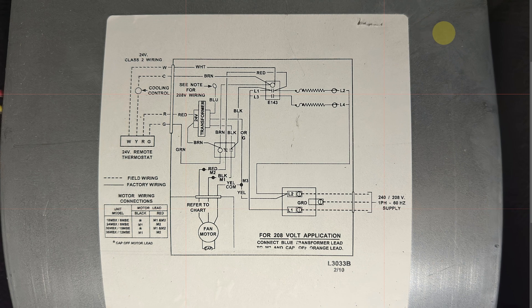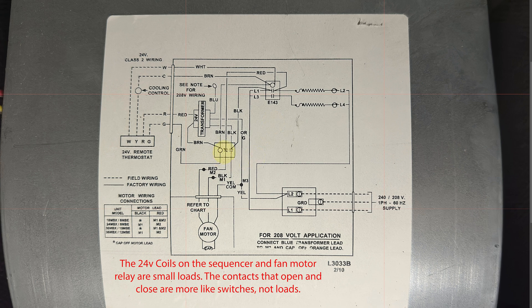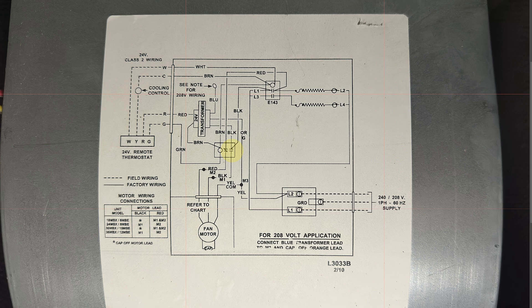Here's our schematic. This is our heat sequencer, our load of interest right now and this is our fan relay which is also a load of interest. This is a 9380. You can see that one of the contacts is normally closed and one is normally open.